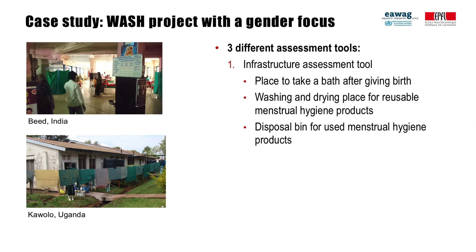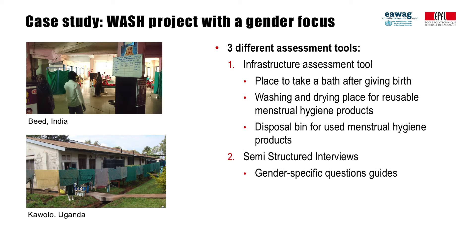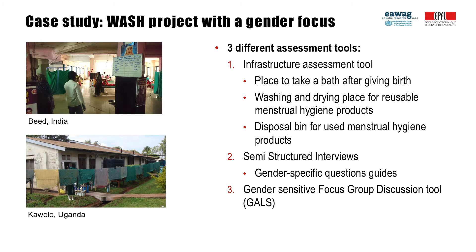First, an infrastructure assessment was undertaken which discovered the following lacking topics: a place to take a bath after giving birth, a washing and drying place for reusable menstrual hygiene products, and a disposal bin for used menstrual hygiene products. Secondly, semi-structured interviews where gender-specific question guides were applied, and a gender-sensitive focus group discussion tool which will be explained in more detail in the next slide.